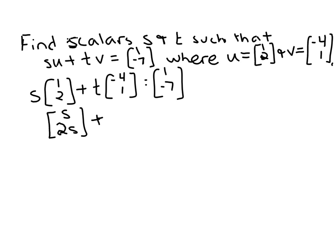Plus the scalar t times the vector [-4, 1]. So negative 4t, t equals [1, -7].